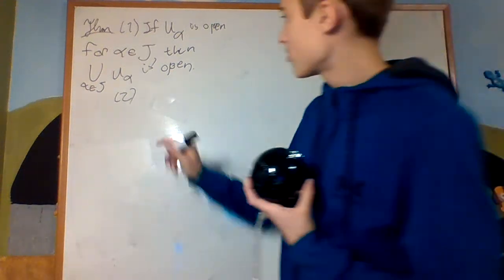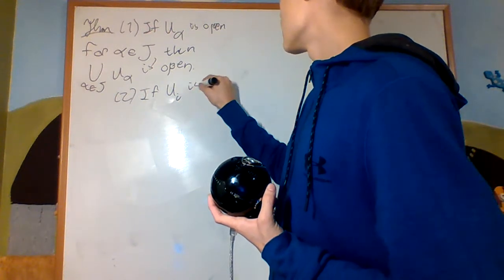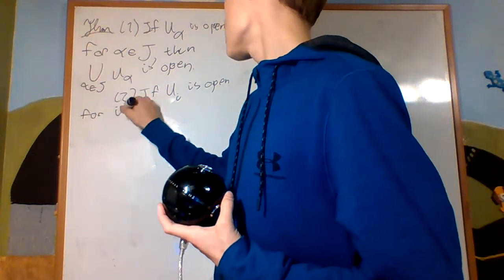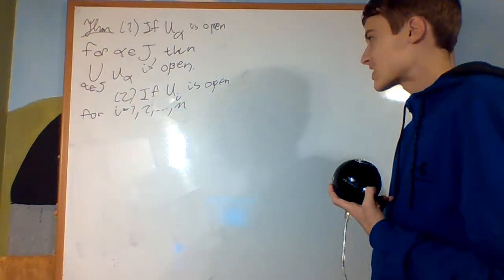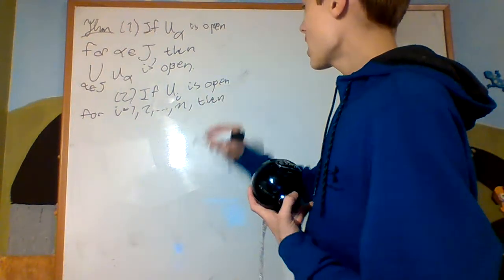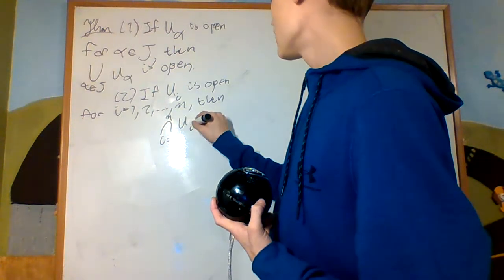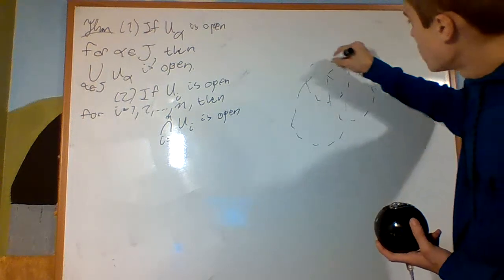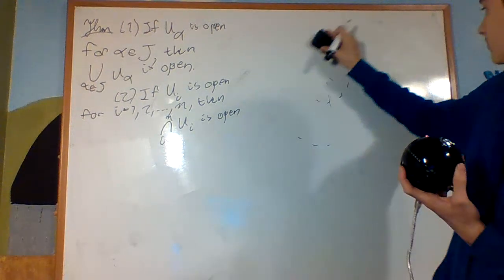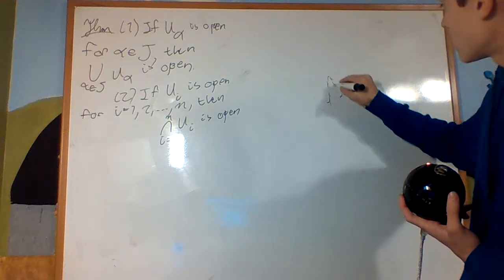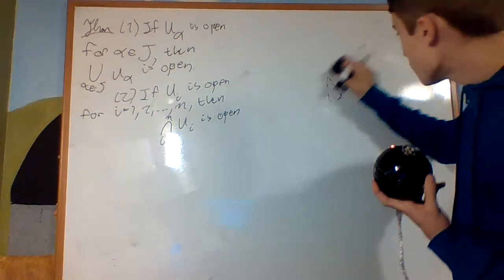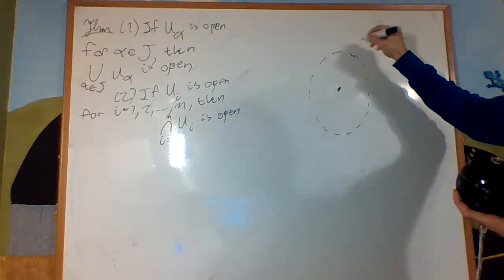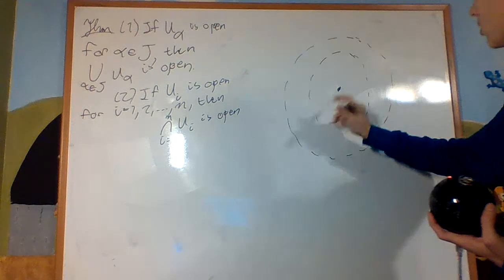Now, the second one is that if U_i is open for i equals 1, 2, up to n, so this is a finite amount, then the intersection from i equals 1 to n of U_i is open. So I have a bunch of open sets, and I take the intersection.